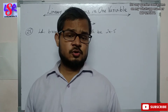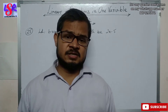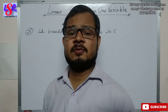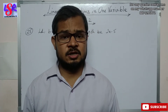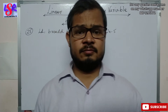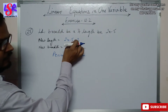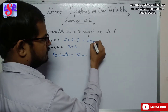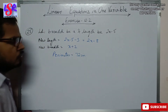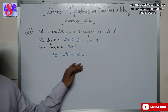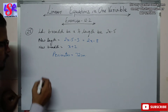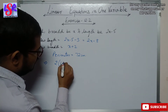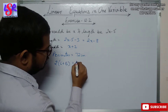As mentioned in the question, if the length is decreased by 3 centimeters and breadth is increased by 2 centimeters, the new rectangle has a perimeter of 72 centimeters. So the new length is 2x minus 5 minus 3, which becomes 2x minus 8, and the new breadth is x plus 2. The perimeter formula for a rectangle is 2(l + b), which equals 72.